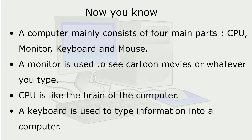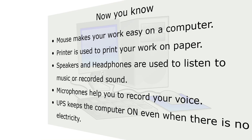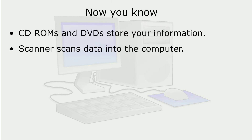A monitor is used to see cartoons, movies, or whatever you type. CPU is like the brain of the computer. A keyboard is used to type information into a computer. Mouse makes your work easy on a computer. Printer is used to print your work on paper. Speakers and headphones are used to listen to music or recorded sound. Microphones help you to record your voice. UPS keeps the computer on even when there is no electricity. CD-ROMs and DVDs store your information. Scanners scan data into the computer.